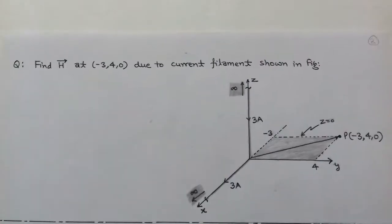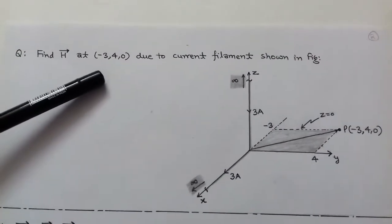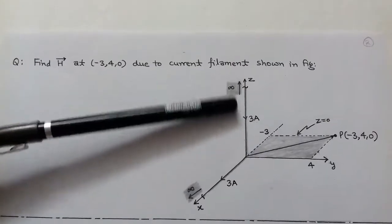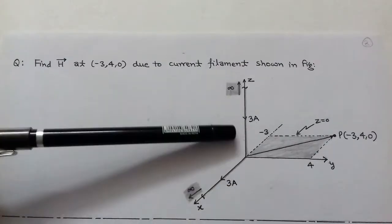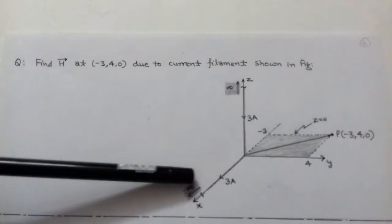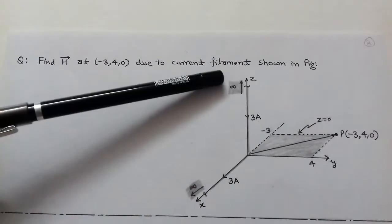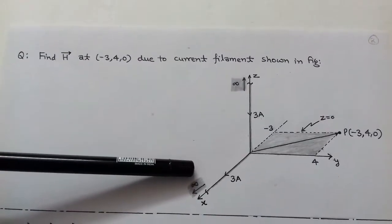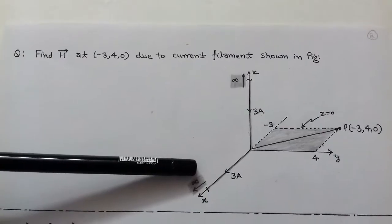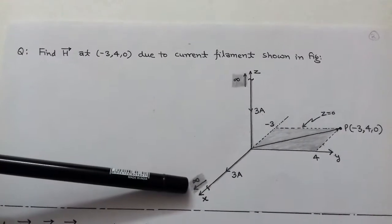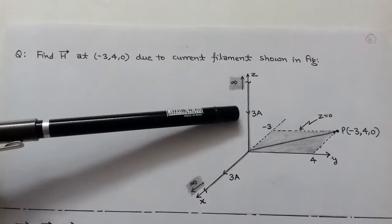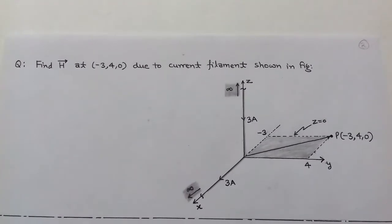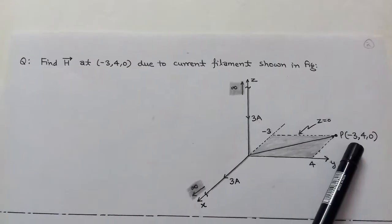The question is: find magnetic intensity H at (-3, 4, 0) due to a current filament shown in the figure. From the figure, the current filament is situated on the x-axis and z-axis, and the direction of current is from plus infinity of z-axis towards plus infinity of x-axis. This is an infinite current filament from z equals infinity to x equals infinity, which carries a current of 3 ampere. We have to determine the magnetic intensity H at (-3, 4, 0).